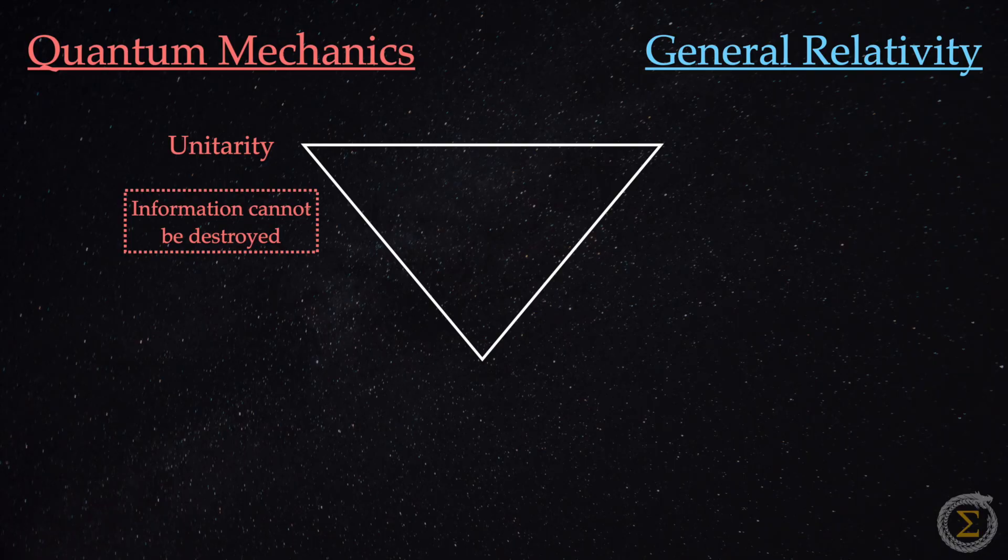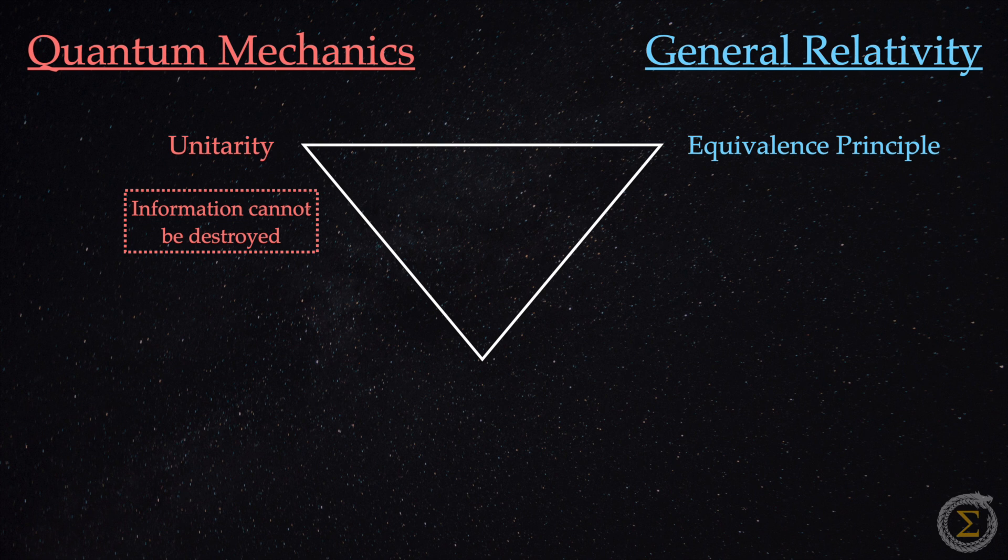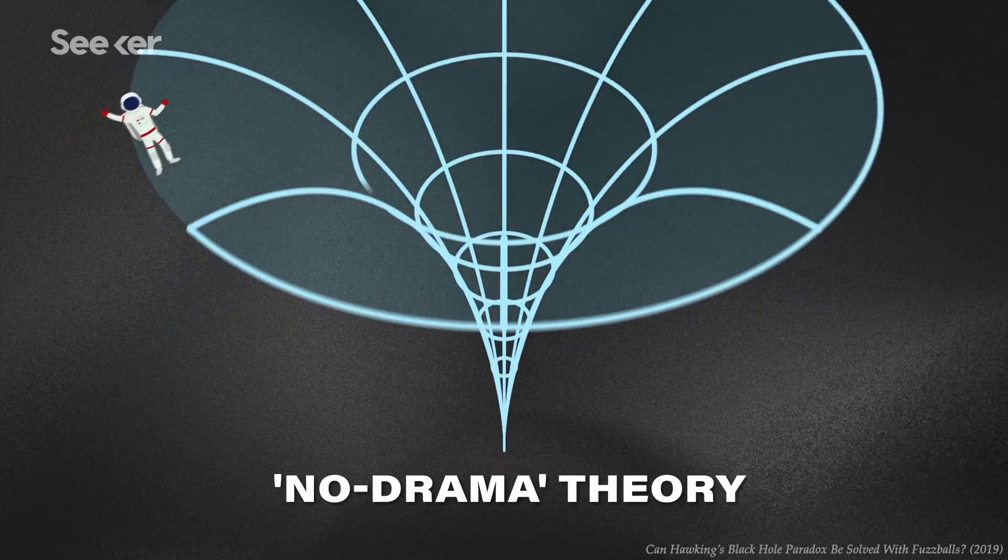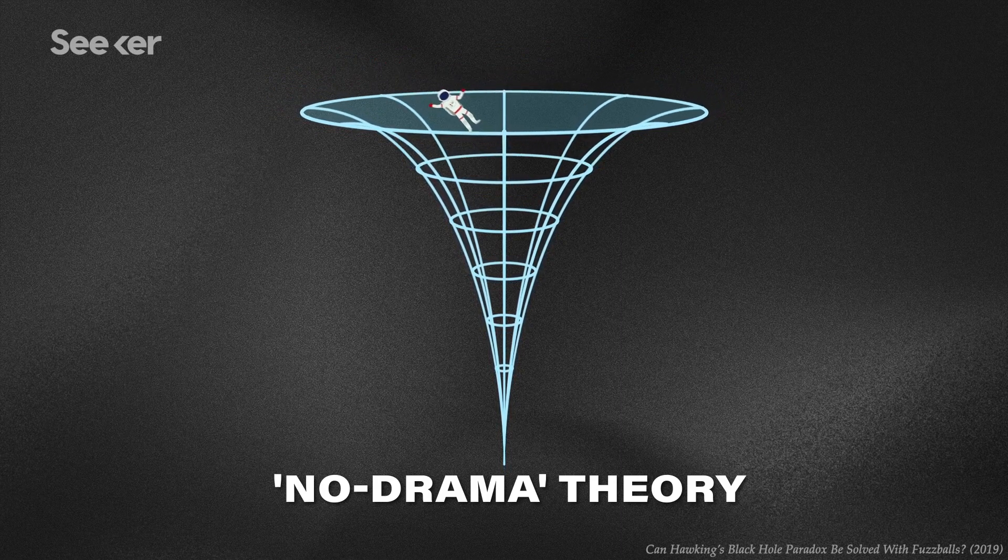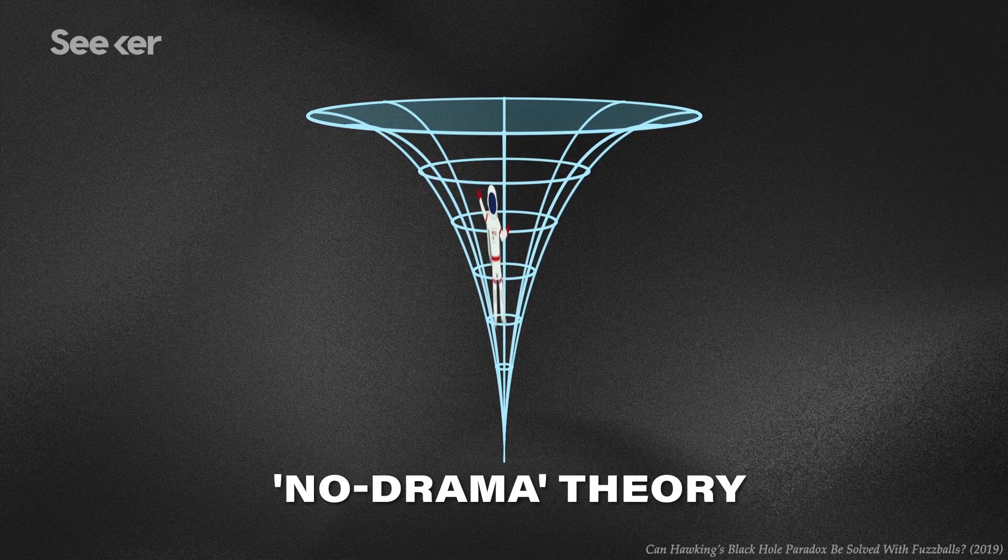Under general relativity, we have the equivalence principle, which claims that the laws of physics are the same for all observers, regardless of their motion. In the context of black holes, it implies that an observer falling through the event horizon should not experience anything unusual at that boundary. The passage should be smooth and unremarkable.